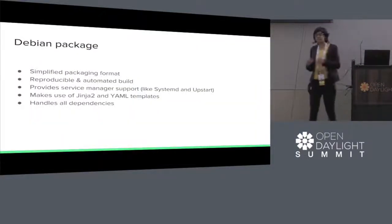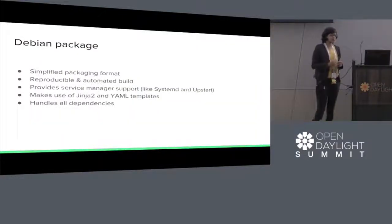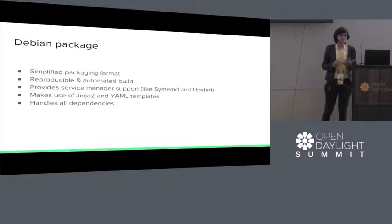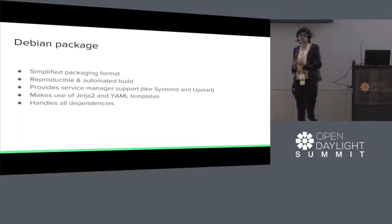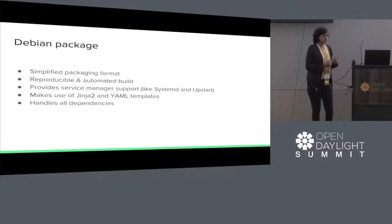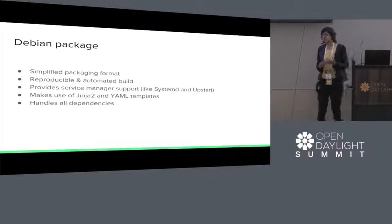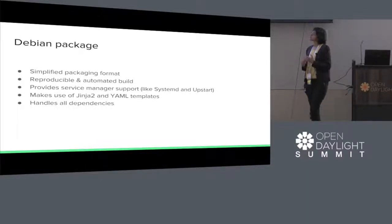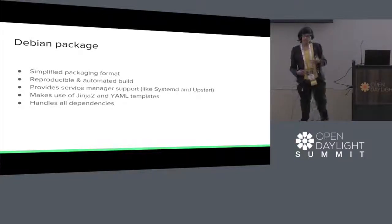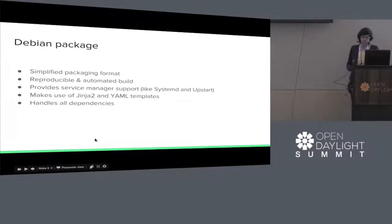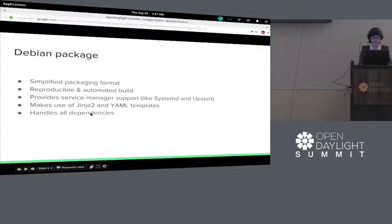The Debian package I built is a very simplified packaging format. It is reproducible and automated. It provides service manager support like Systemd and Upstart. It also makes use of Jinja2 and YAML templates, so it's basically dynamic. We can build .debs for any of the OpenDaylight versions available. I can just show you what the vars file looks like.